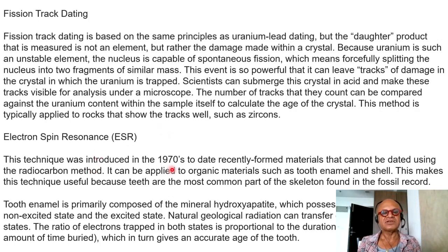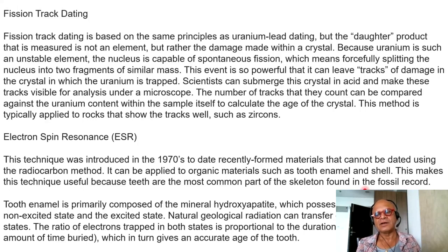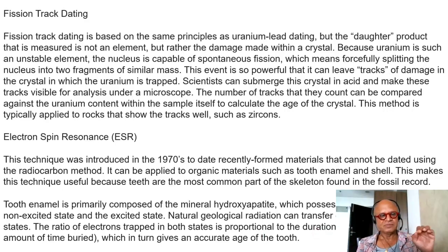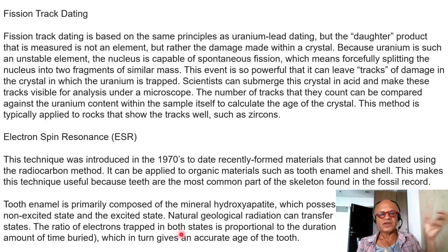Electron spin resonance was introduced in the 1970s to date recently formed materials that cannot be dated using the radiocarbon method. It can be applied to organic materials such as tooth enamel and shell, which is critical for dating evolution because teeth are the most common part of the skeleton found in the fossil record and are well preserved. Tooth enamel is primarily composed of the mineral hydroxyapatite, which possesses two energy states: the non-excited state and the excited state. Natural geological radiation can transfer electrons between these two states. The ratio of electrons trapped in both states is proportional to the duration of irradiation — i.e., the amount of time it has been buried — giving an accurate age of the tooth.